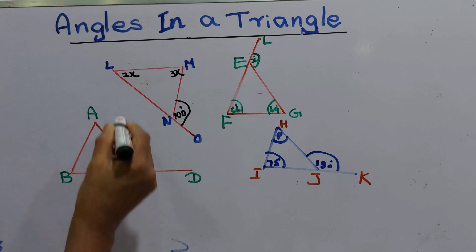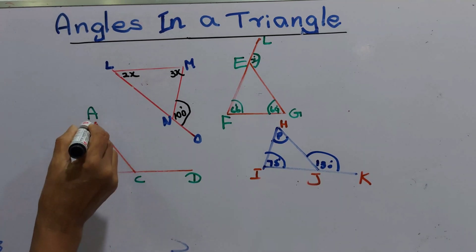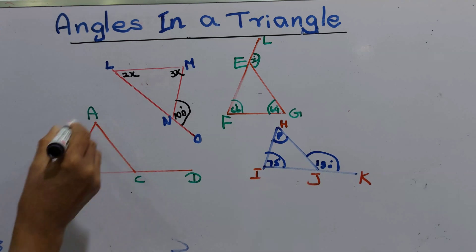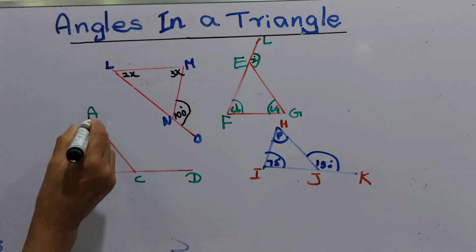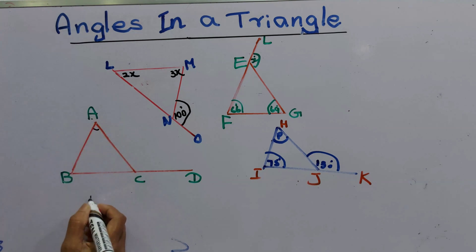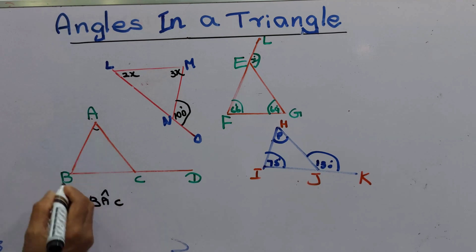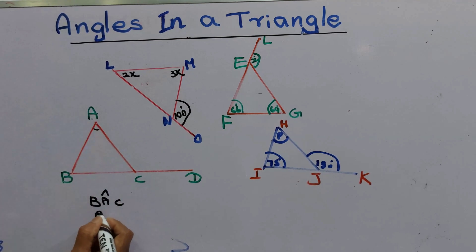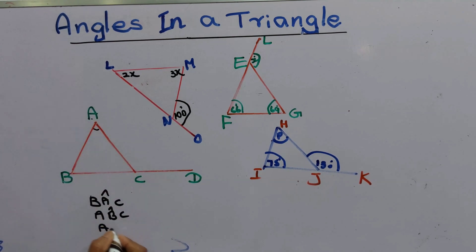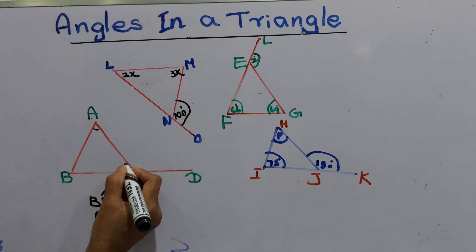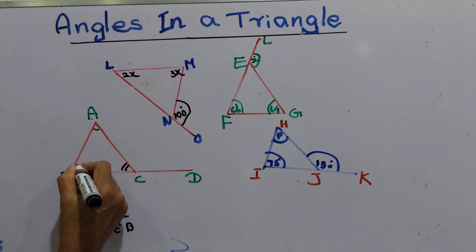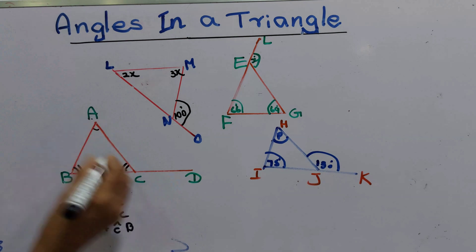See, there are how many angles in a triangle? One angle is BAC, another one is ABC, and the other one is ACB. These are the interior angles in the ABC triangle.